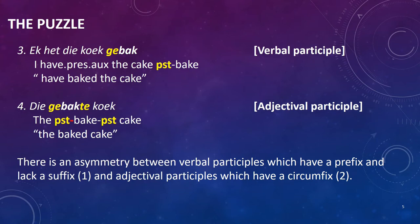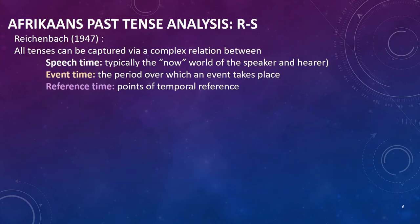In order to analyze the Afrikaans past tense, we're going to be using the system of Reichenbach (1947), who held that all tenses can be captured via a complex relation between speech time — typically the 'now' of the speaker — the event time, which is the period over which a verbal event takes place, and the reference time, which are points of temporal reference in the sentence, usually indicated by adverbials and/or context. To start our analysis, we're going to look at the relationship between the reference time and the speech time in Afrikaans.